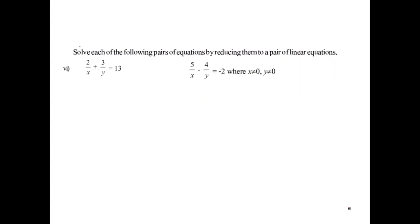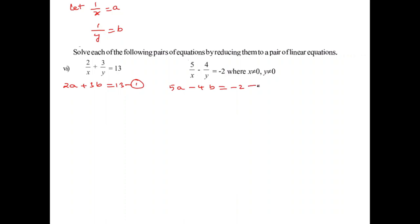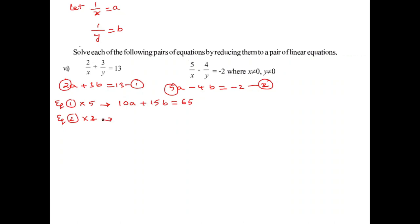For the next problem, assuming 1 by x equals A and 1 by y equals B. The first equation reduces to 2A plus 3B equals 13 (equation 1), and the second reduces to 5A minus 2B equals minus 4 (equation 2).